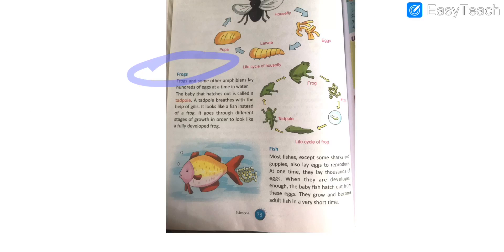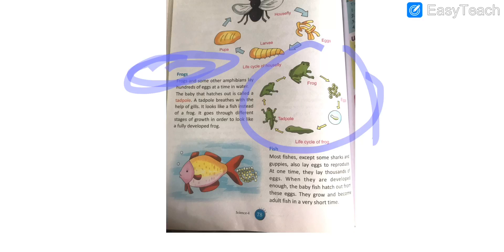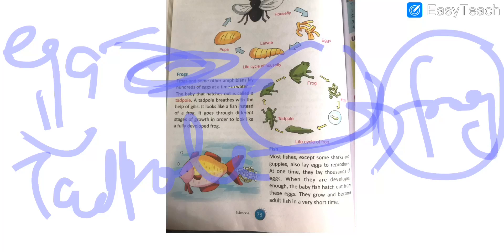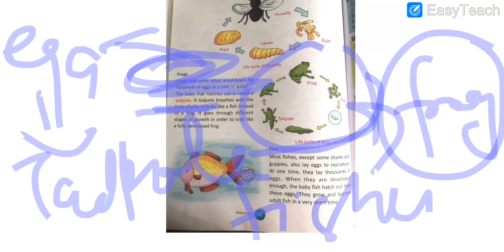Similarly, you can see the life cycle of a frog. Frogs live in water and also on land — that is, they are amphibians. They lay hundreds of eggs at a time in water, and the baby that comes out of the egg is called a tadpole. This tadpole does not resemble a frog; instead it resembles a fish and has gills for breathing. In order to look like a fully developed frog, a tadpole goes through different stages.